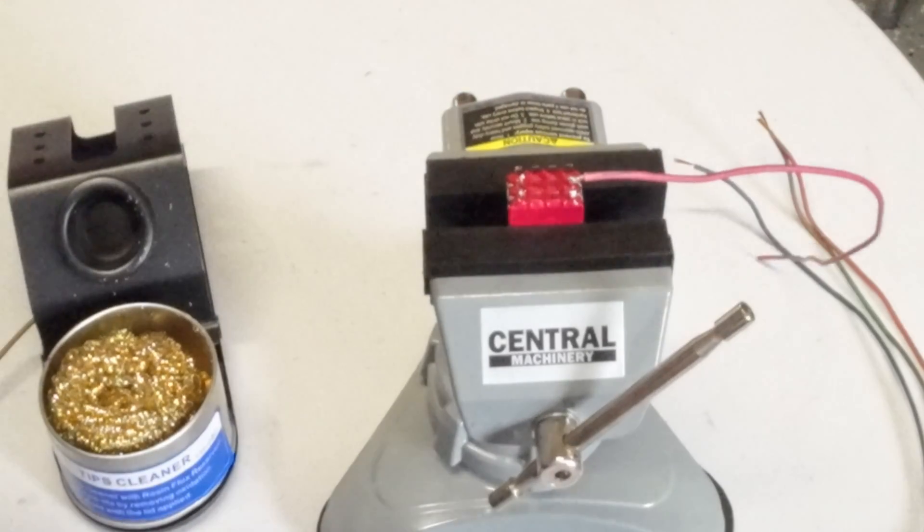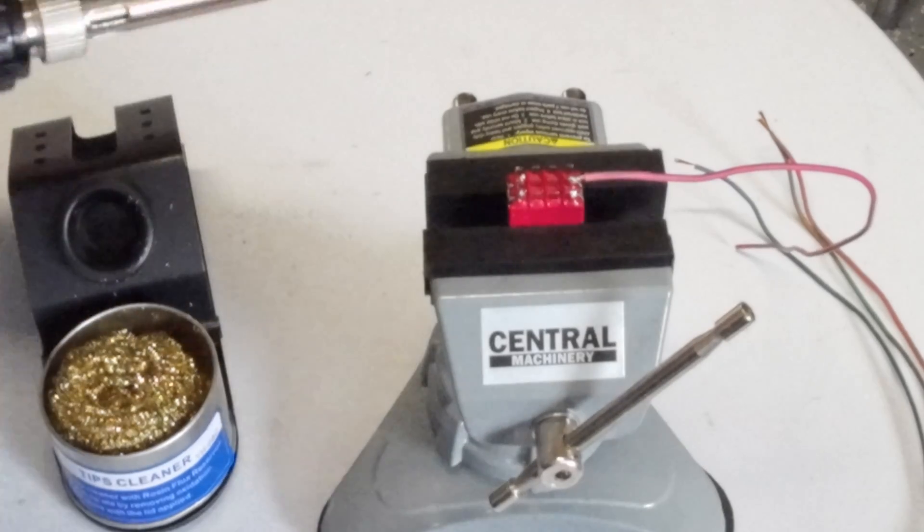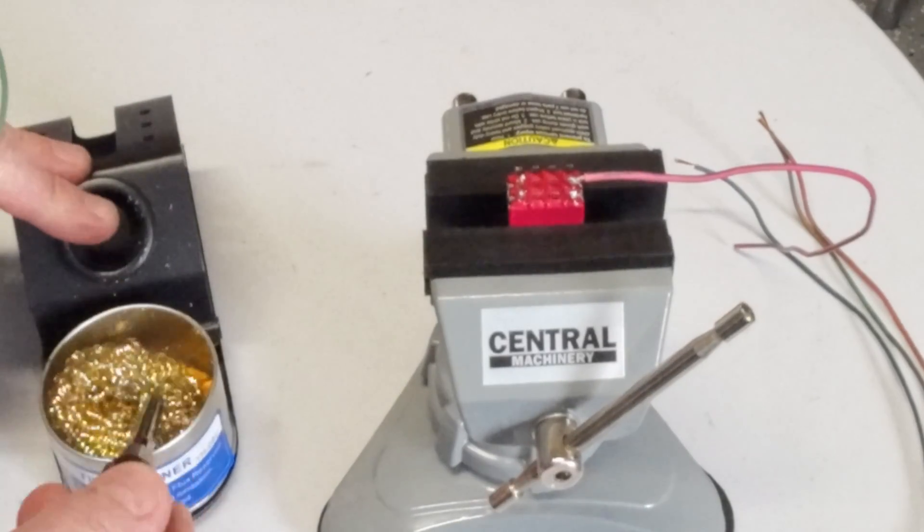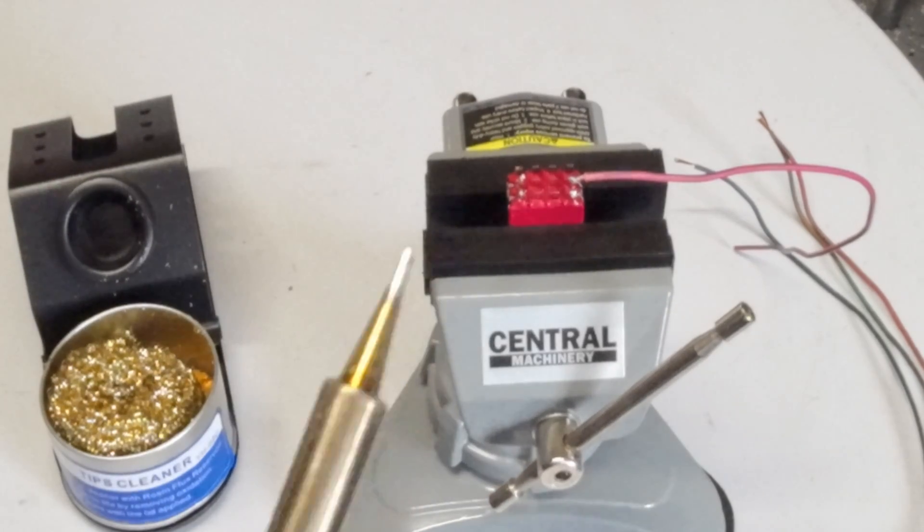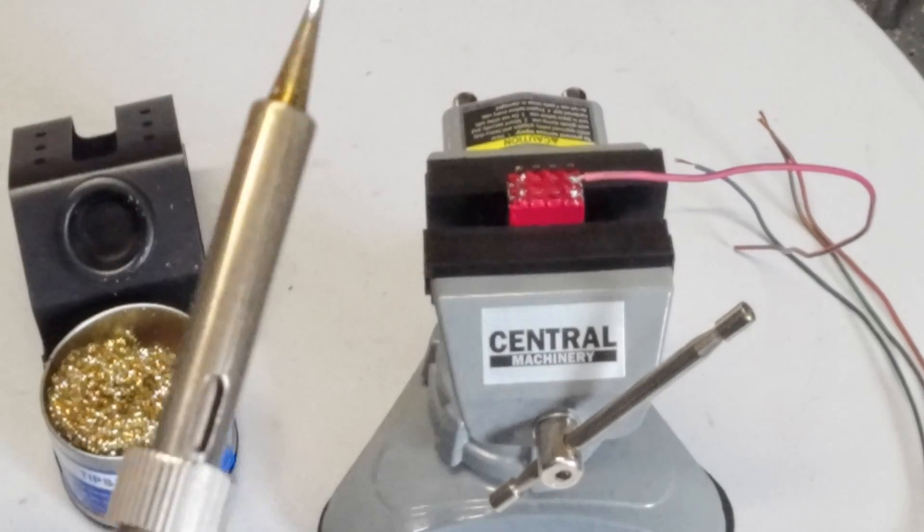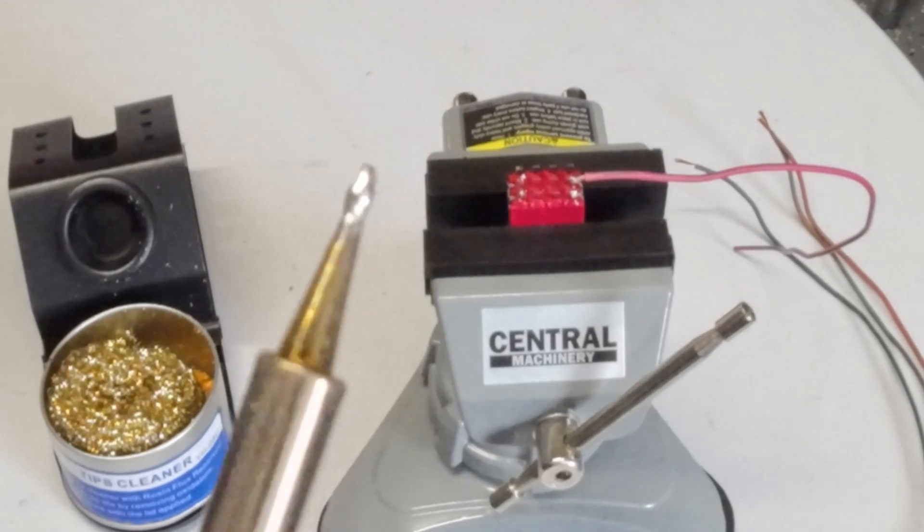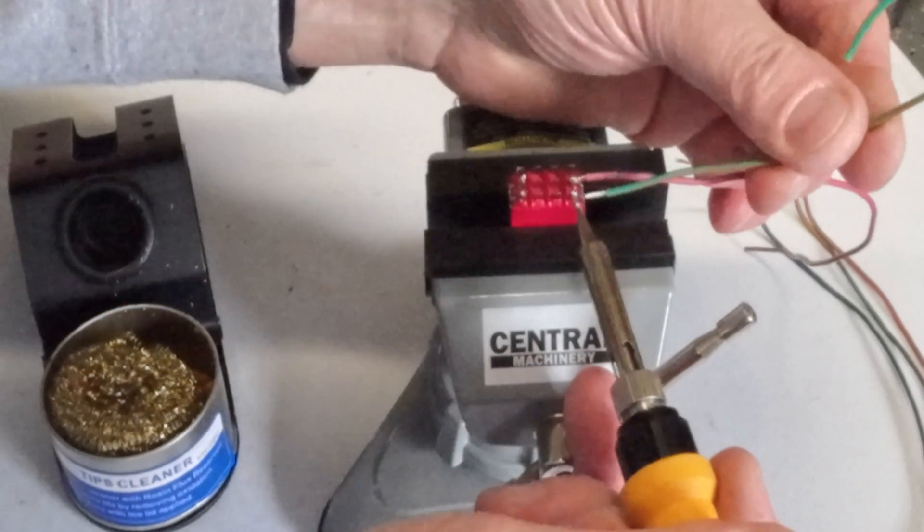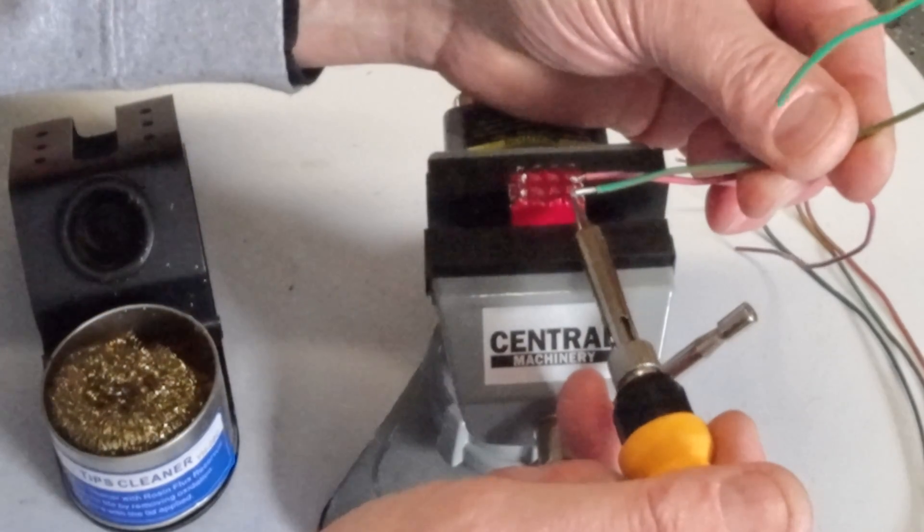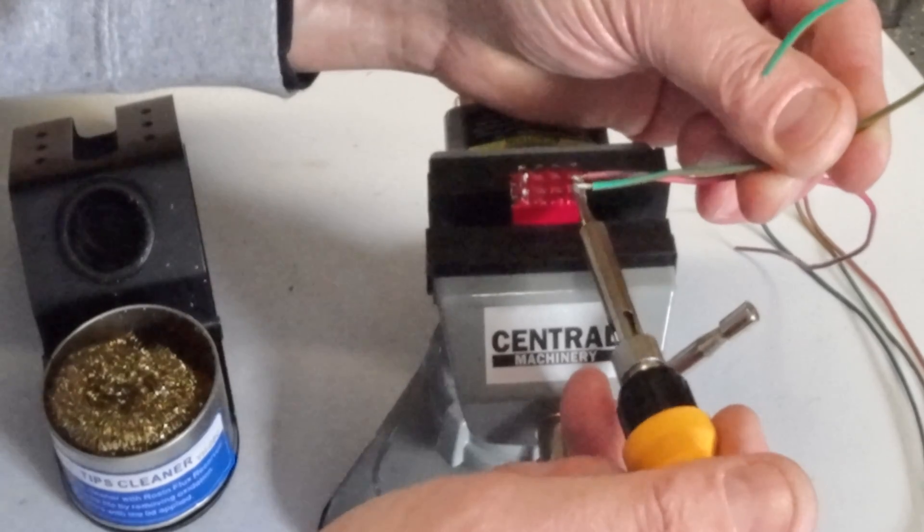You see how that goes—I didn't have to add any additional solder. I'm going to clean my solder tip again and maybe add a little bit more solder to the tip. Now I'm going to heat up the contact and the wire at the same time with that solder that's on the tip.